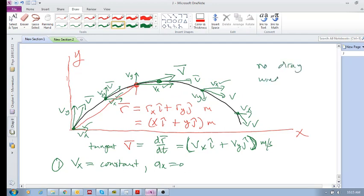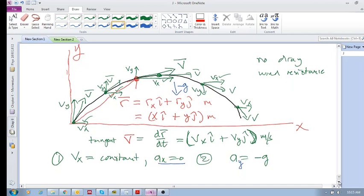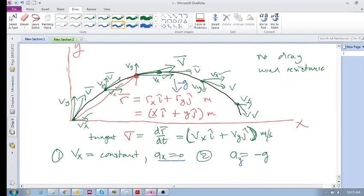The other thing is the only acceleration acting on this particle is minus g. So it's minus g. That's the only acceleration, and it is obviously in the y direction. So a_y is minus g, a_x is zero, and a_y is minus g. Okay, so that's enough for now. We will continue in the next one again on projectile motion.